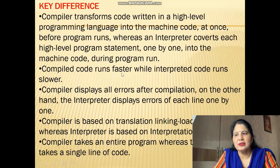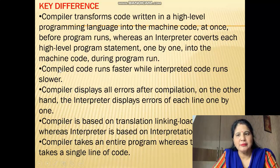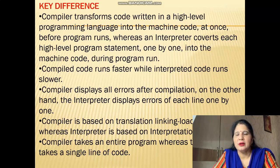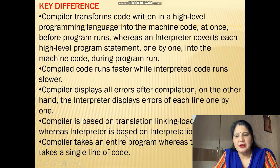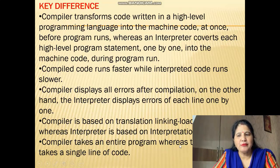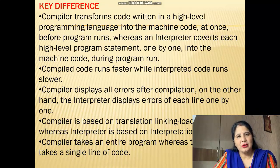Second difference: compiled code runs faster while interpreted code runs slower — the compiler takes less time but the interpreter takes much more time compared to the compiler. Third difference: the compiler displays all errors after compilation is complete, whereas the interpreter displays errors of each line one by one. The compiler is based on a translation-linking-loading model, whereas the interpreter is based on interpretation methods. The compiler takes an entire program and converts it into machine code, but the interpreter takes a single line of code at a time.